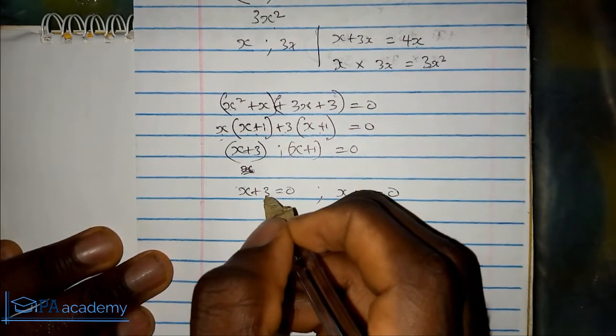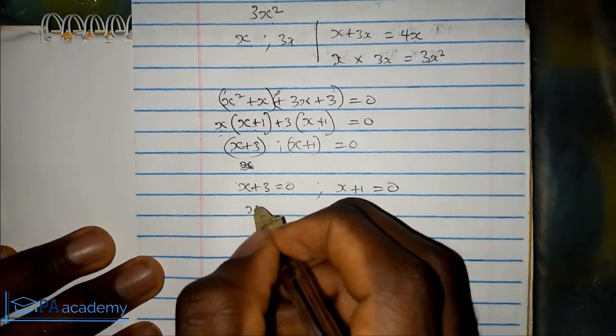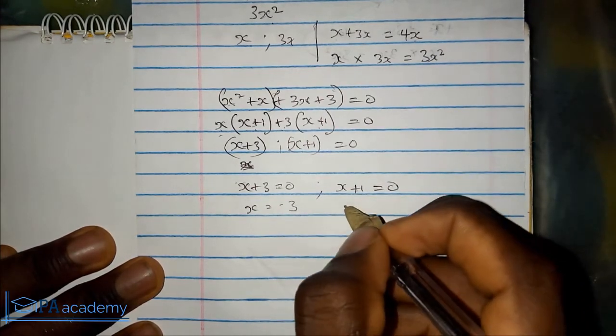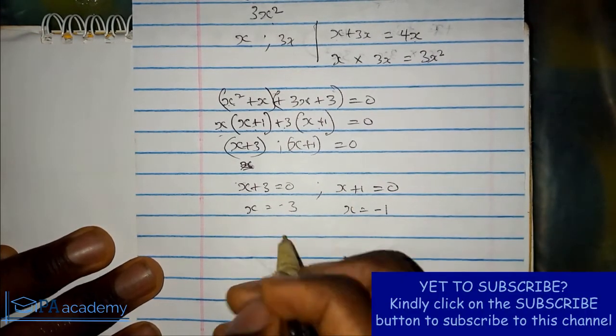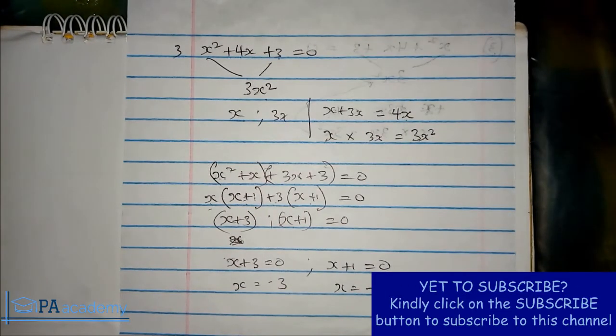If 3 comes to the other side of the equation so x can stand alone, because we are looking for x, x equals minus 3. If minus 1 comes to the other side, x equals minus 1. This is the value of x for the quadratic equation x squared plus 4x plus 3.